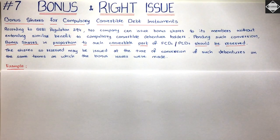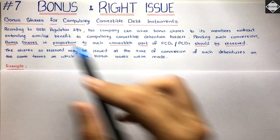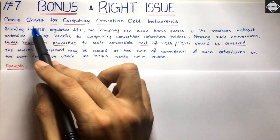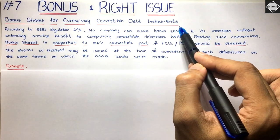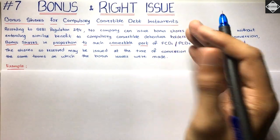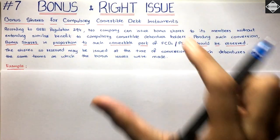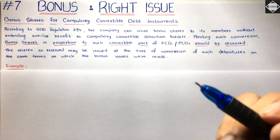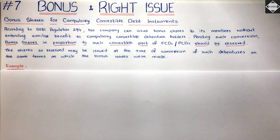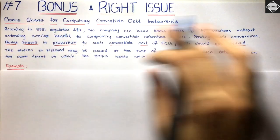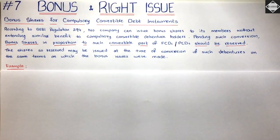Hi everyone, welcome back to Sahab Academy. Today in the seventh video of the Bonus and Right Issue chapter, we are going to understand the topic: bonus shares for compulsory convertible debt instruments. I have personally explained this topic briefly in the first video, but now we have to understand this logically — the reasoning behind this. We will also solve a problem on this.